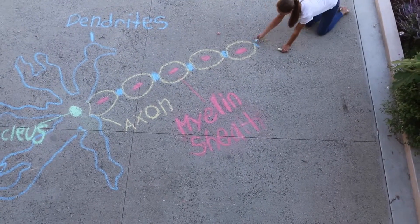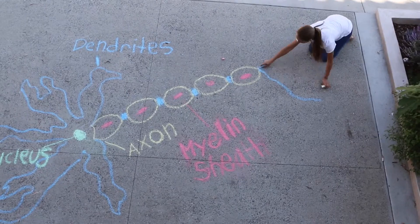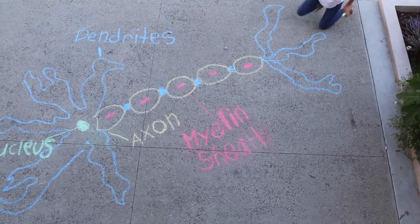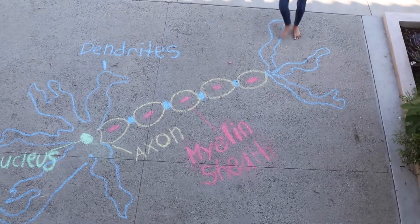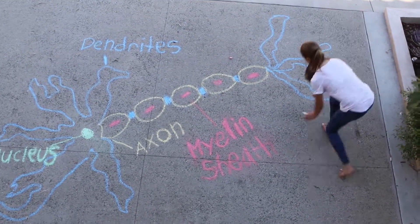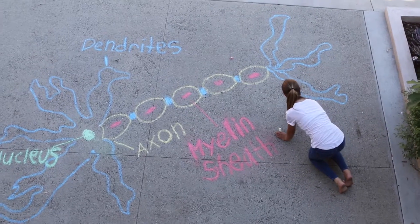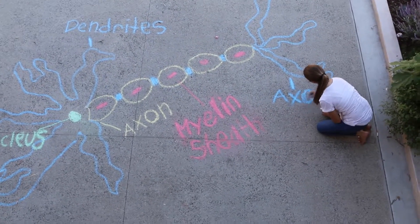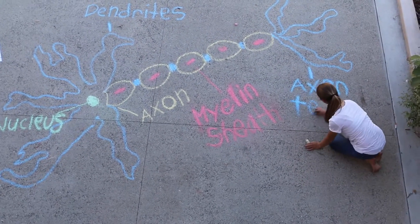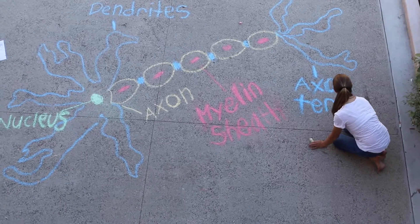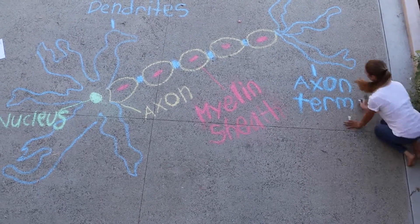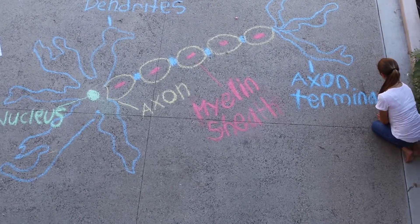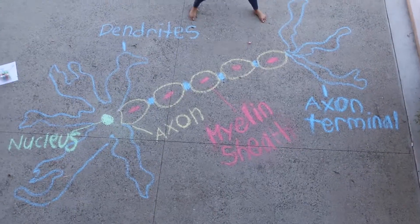Now Lily is drawing the axon terminal. It is the very end of a branch of the nerve's axon. They release neurotransmitters to excite or inhibit other cells. The function of the axon terminal is to transmit a neurotransmitter from one neuron to another. It branches out of the end of the axon.